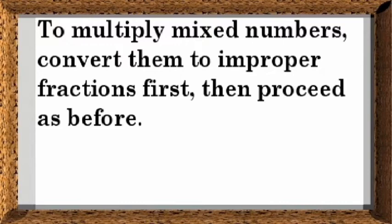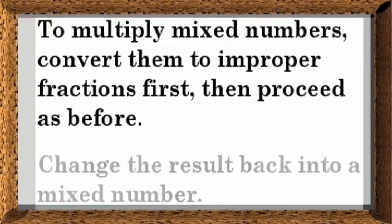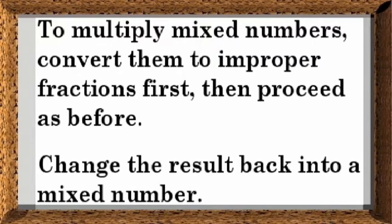To multiply mixed numbers, convert them to improper fractions first, then proceed as before. Change the result back into a mixed number.